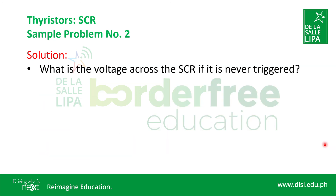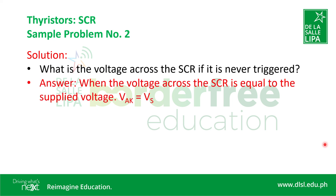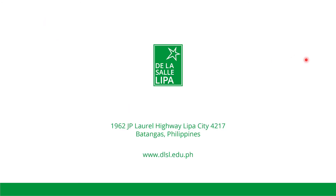For the follow-up question: what is the voltage across the SCR if it is never triggered? This means the SCR never turned on — it stayed in the off condition. When VAK equals the supplied voltage, the SCR was never triggered, meaning the turn-on voltage of the SCR was never exceeded. The supply voltage is too small, causing it to always equal the voltage drop across the anode to cathode of the SCR. Thank you.